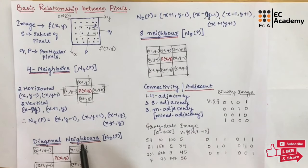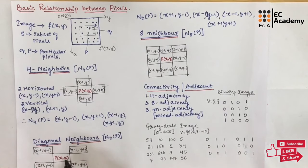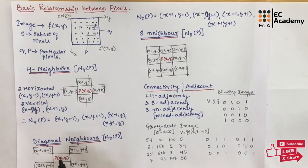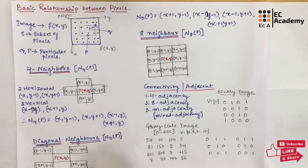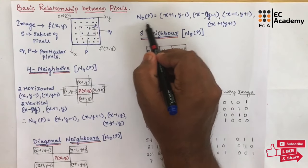Next let us understand diagonal neighbors, represented as Nd of P. A pixel P with coordinates x comma y has four diagonal neighbors which are connected diagonally. The coordinates x minus 1 comma y minus 1, x minus 1 comma y plus 1, x plus 1 comma y plus 1, and x plus 1 comma y minus 1 form the diagonal neighborhood pixels.